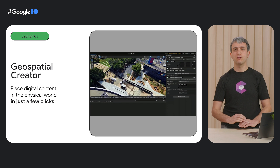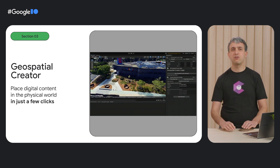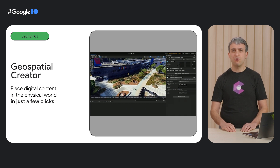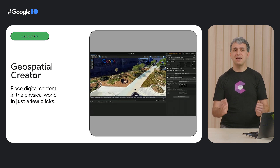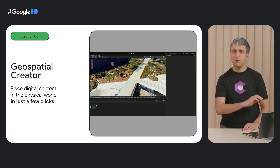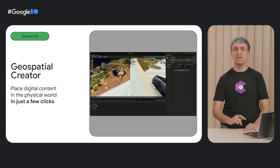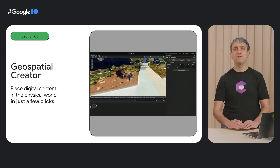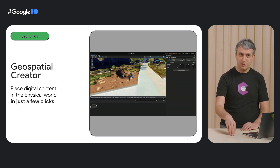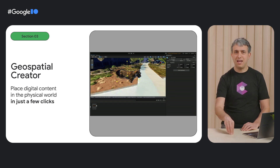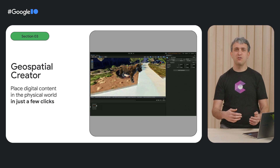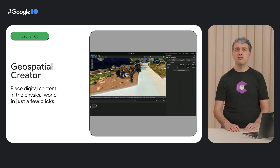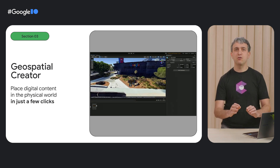Let's start with the new AR tools for creators. Today, we are releasing the Geospatial Creator, a set of AR features powered by ARCore and Google Maps platform that will make it easier to place digital content in the physical world in just a few clicks. With the Geospatial Creator, creators can easily visualize where in the world they want to place their digital content through aerial and ground-level views, similar to what you would experience with Google Earth or Google Street View. They can then drop an anchor at the selected location, drag and drop their digital asset, and voila! No need to get latitude, longitude, elevation, or the rotation quaternion of the selected location anymore. We do all the hard work for you, so you can focus your efforts on creating magical, immersive experiences.